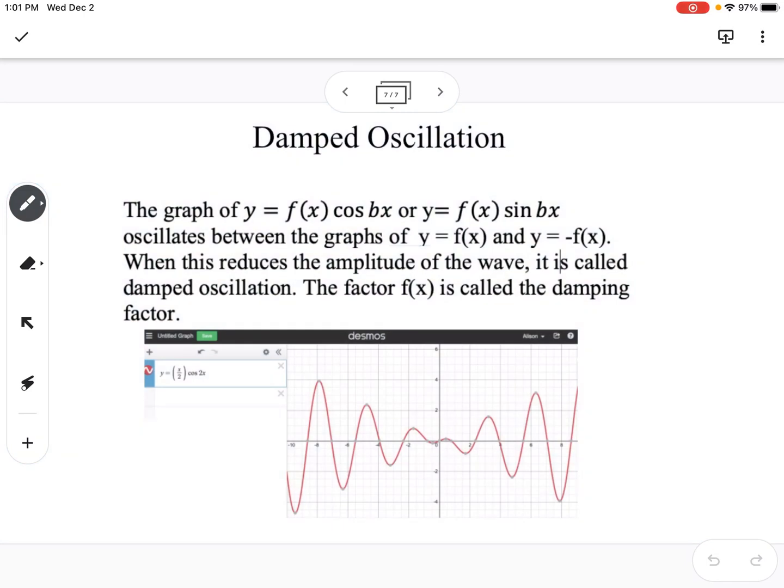The last thing that we're going to talk about for this section is damped oscillation. So the graph of f of x cosine of bx or y equals f of x sine of bx oscillates between the graph y equals f of x and y equals negative f of x. So when this reduces the amplitude of the wave, it's called damped oscillation, and the factor f of x is called the damping factor.